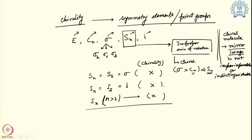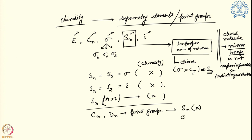That is the mathematical interpretation of chirality. When we bring this to point groups, the Cn and Dn point groups do not contain any Sn axis, so they can be chiral in nature. In simplistic form, to find out whether a molecule or object is chiral, we simply find out its point group — if it belongs to Cn or Dn, it will be chiral.